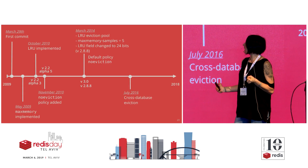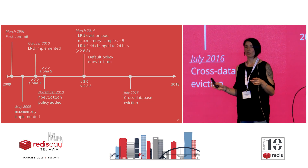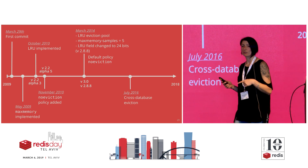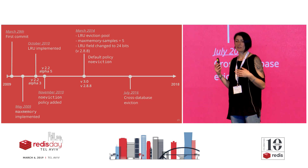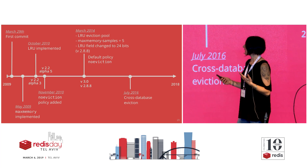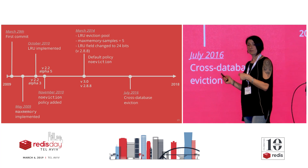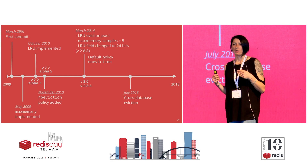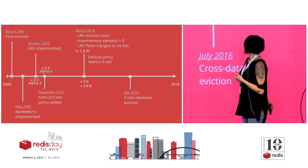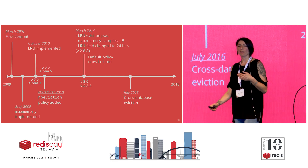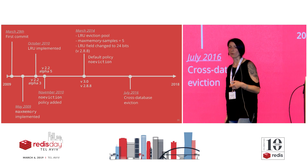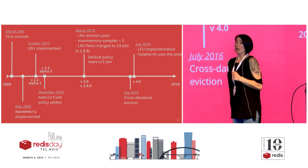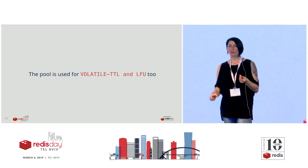This is how the timeline looked at that moment. In the beginning, we didn't have cross-database eviction - every time we needed to evict a key, we would just look in one database. Then there was an issue reported that got a lot of debate and conversation, and what you saw now - where we look through all the databases - was implemented in the algorithm. That was about the same time when we also implemented the eviction pool for volatile-TTL, in July 2016.